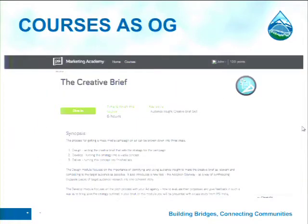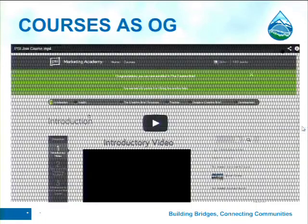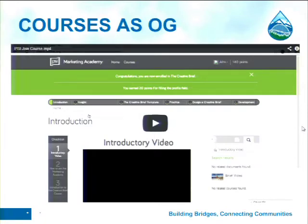Why are courses ideal to be organic groups? Learners can join specific courses, you can set up individualized user roles like mentors, and contacts are grouped together by course. So we can do cool things like have your chat buddies organized by which course they're taking with you. Let me show you what a course looks like in the PSI Marketing Academy. At the bottom you have your synopsis, and the operative button is that big green 'Dive In' button, which allows you to join the organic group.